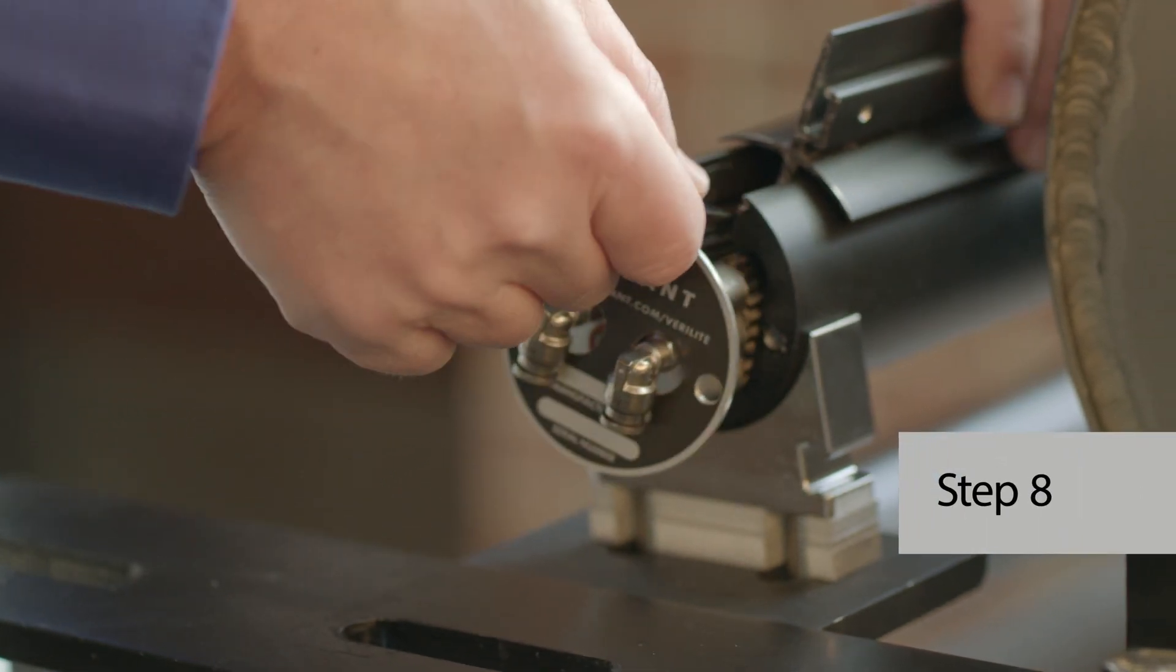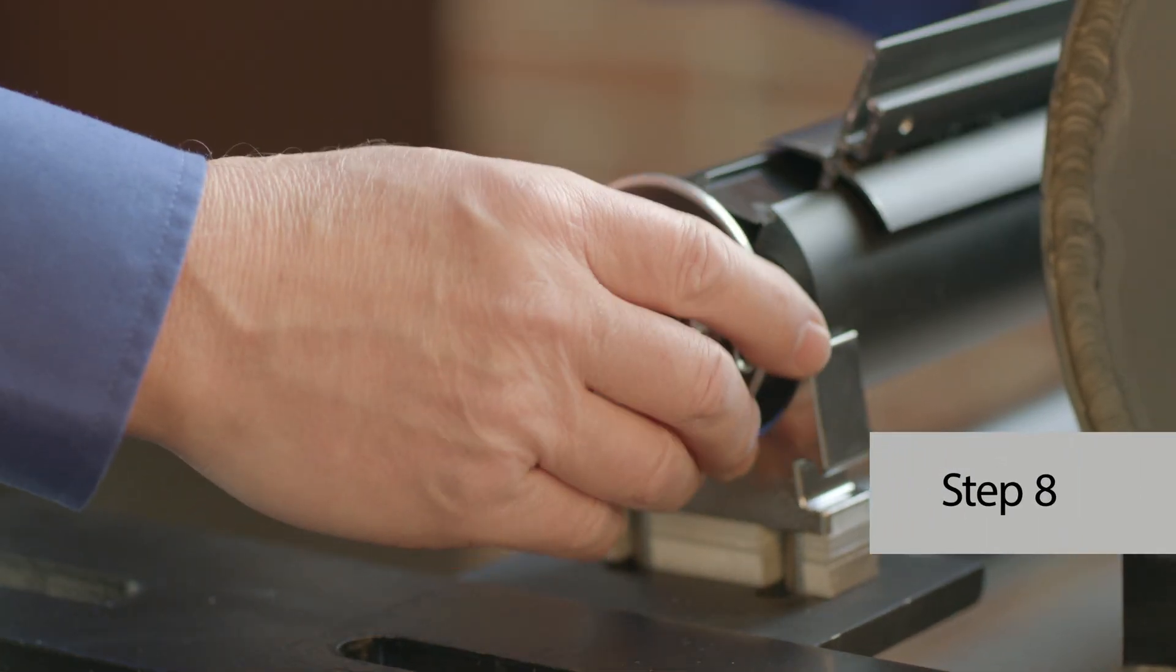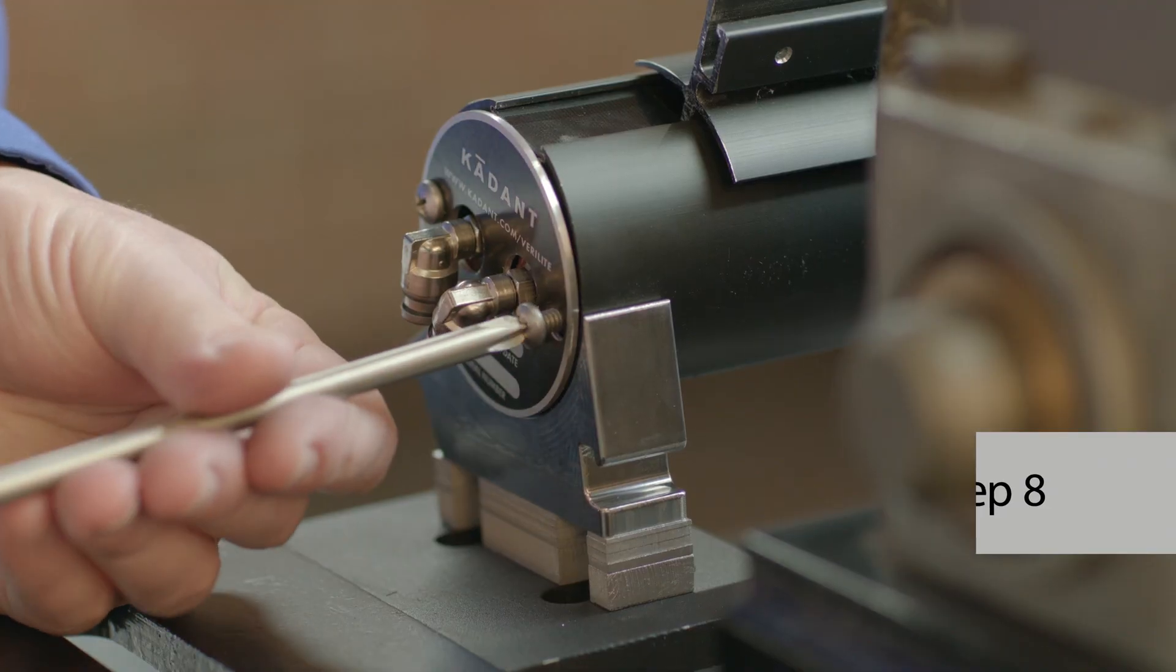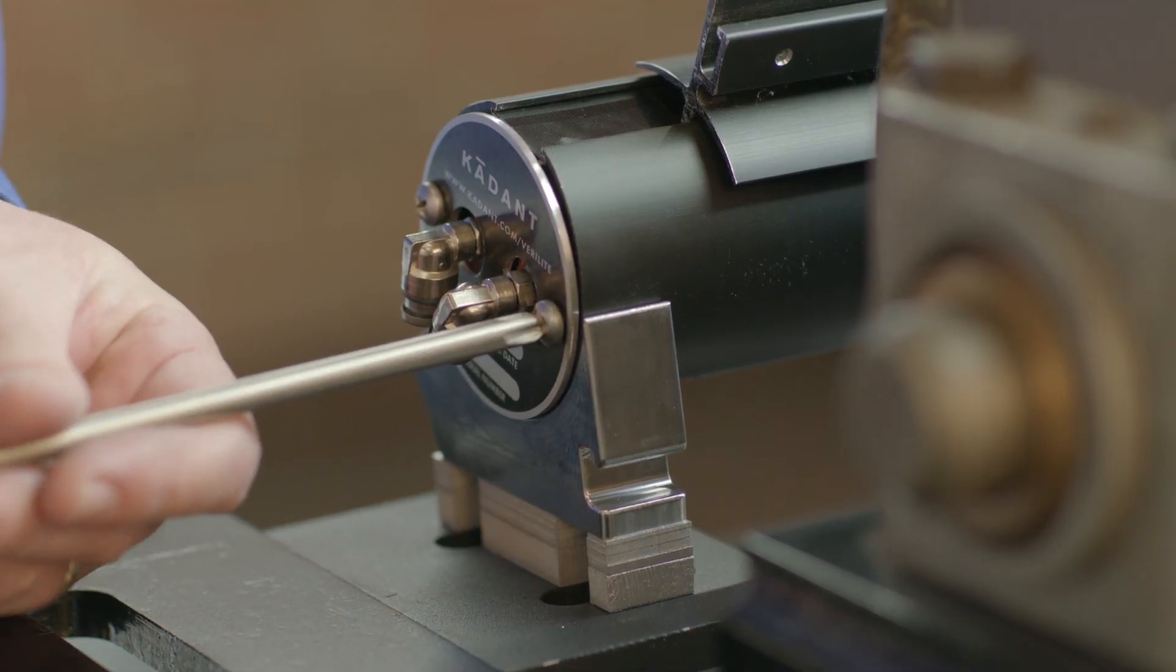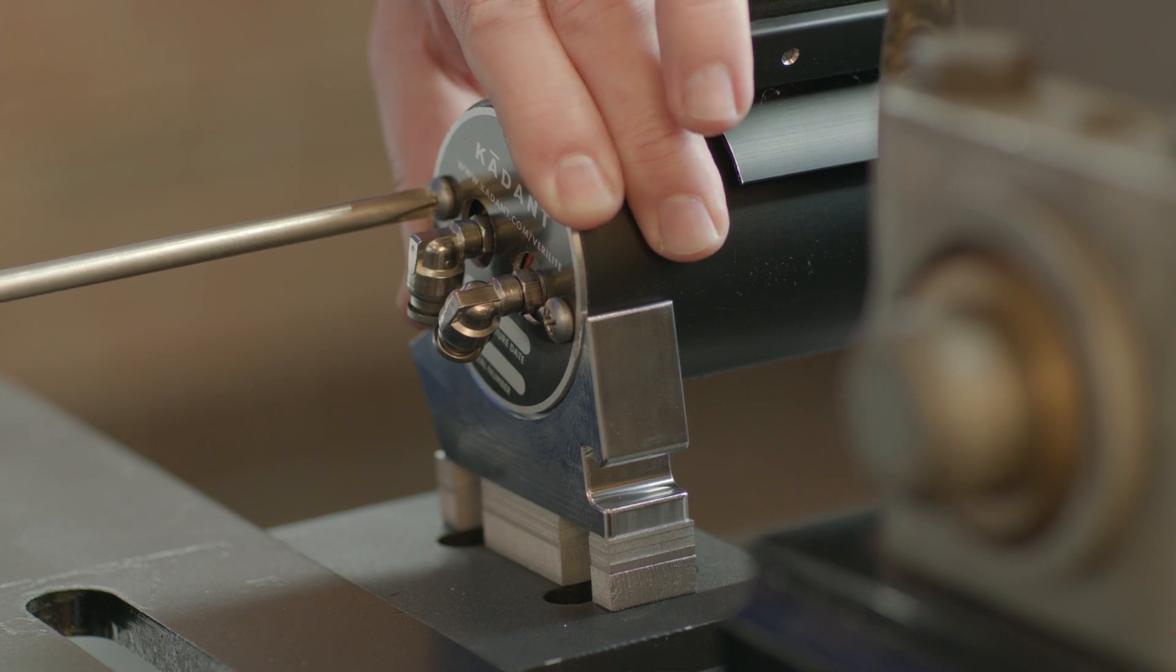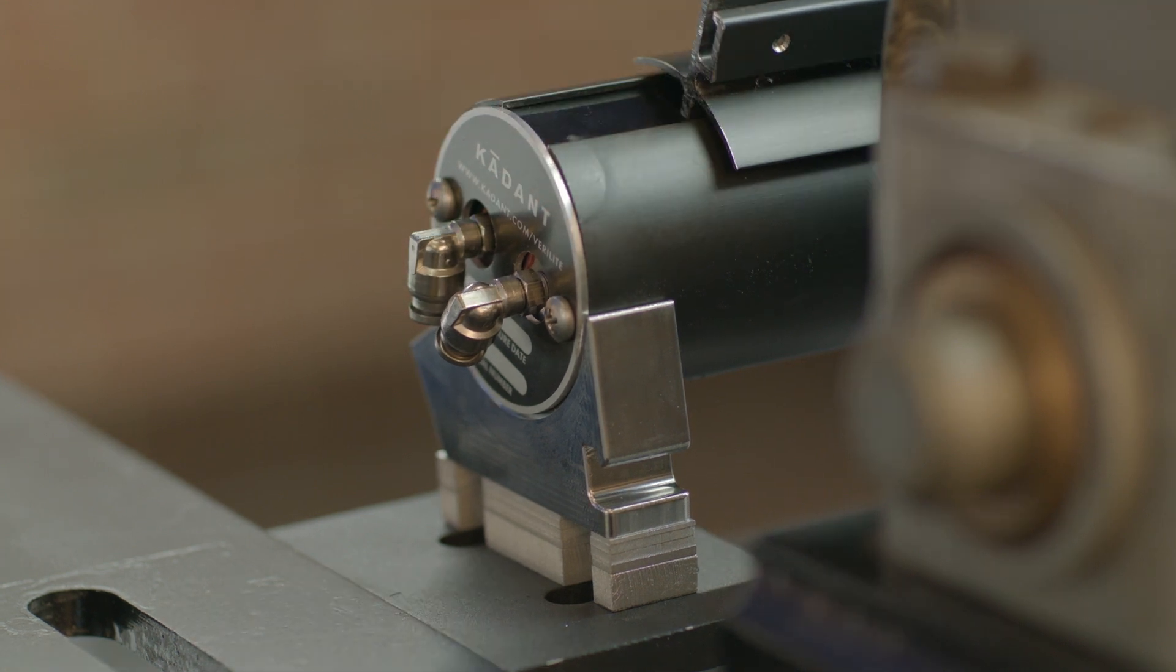Step eight, if it's not already put together, assemble the Verilite by sliding the top plate and both loading hoses into the Verilite body. Center the top plate and hoses within the Verilite assembly.